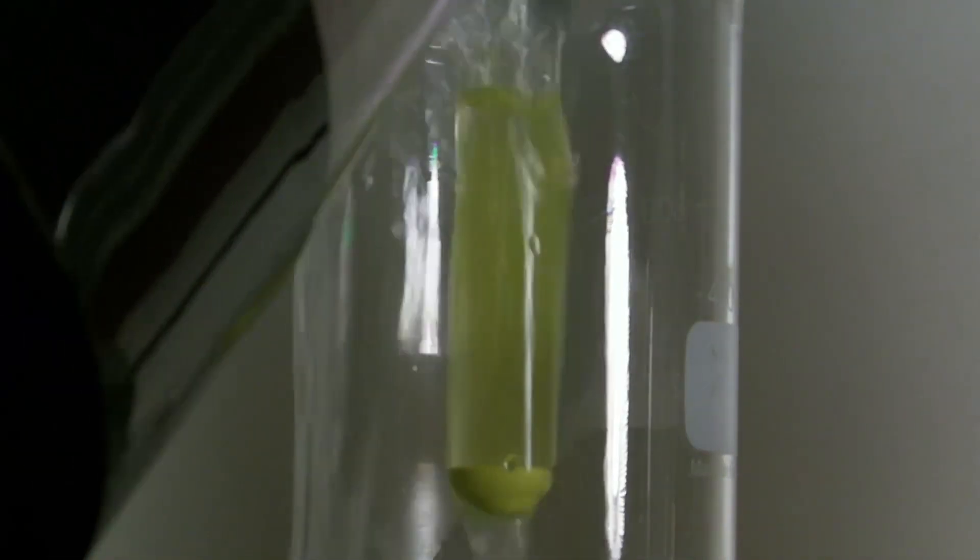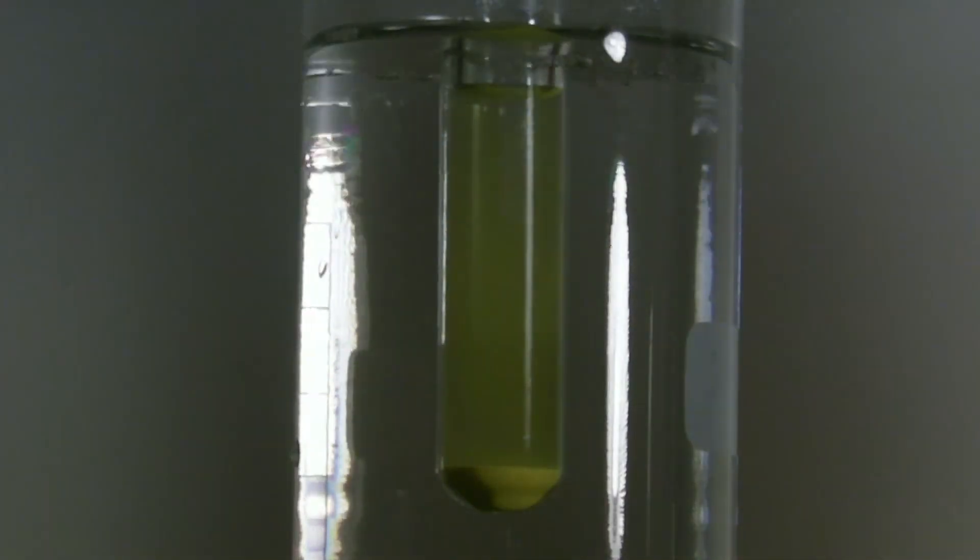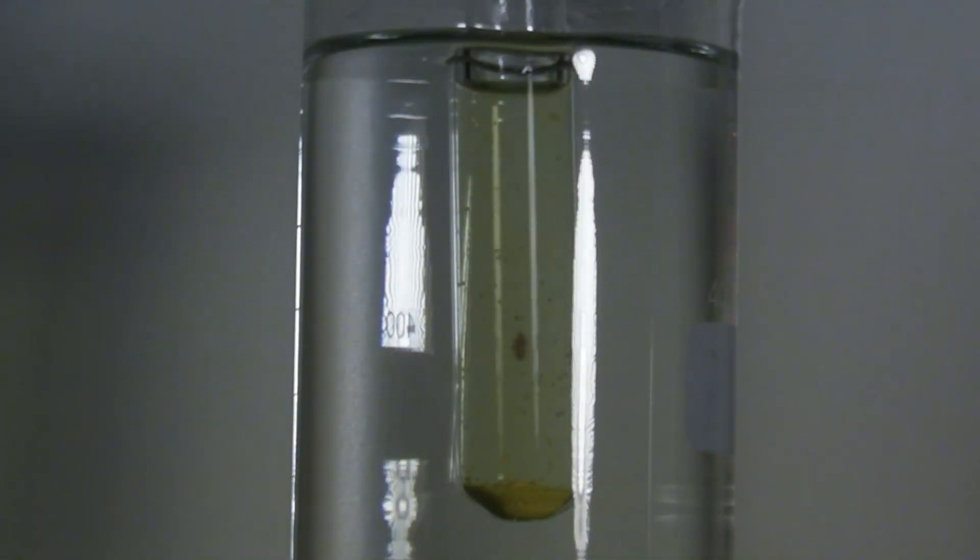When the test tube is heated with boiling water, part of the lead iodide dissolves because it's about 10 times more soluble at this temperature.